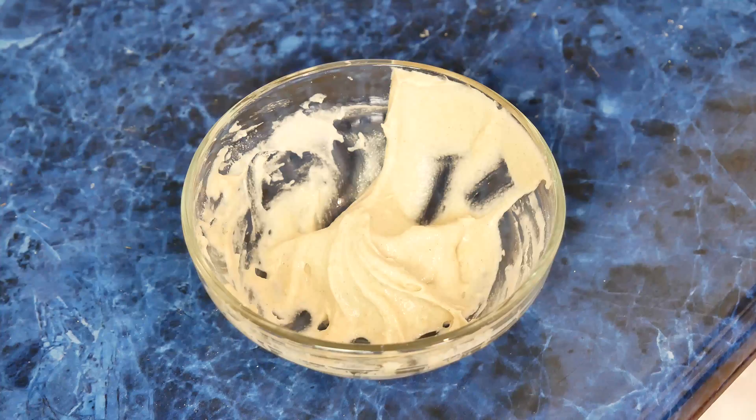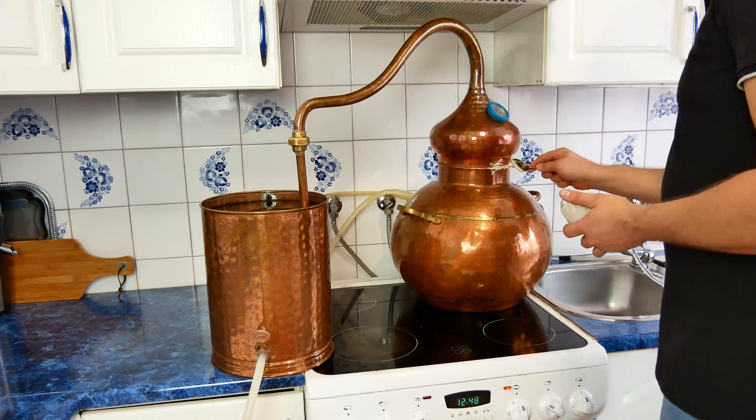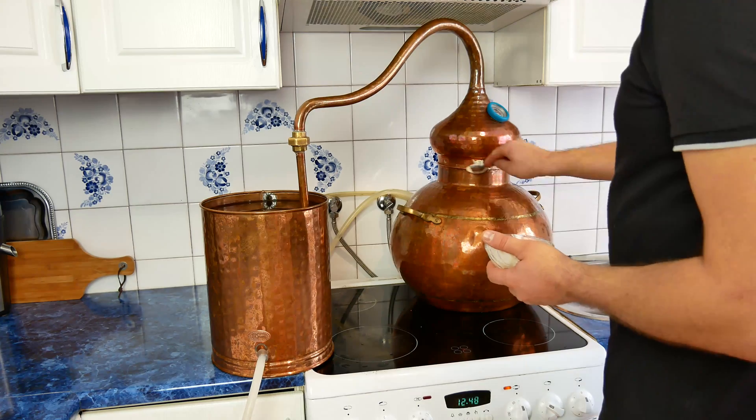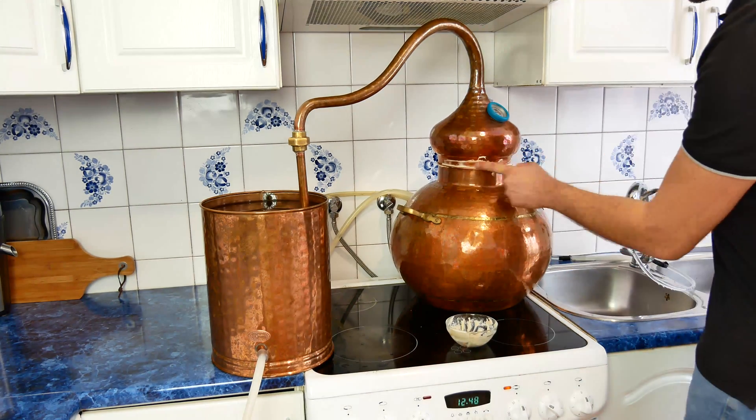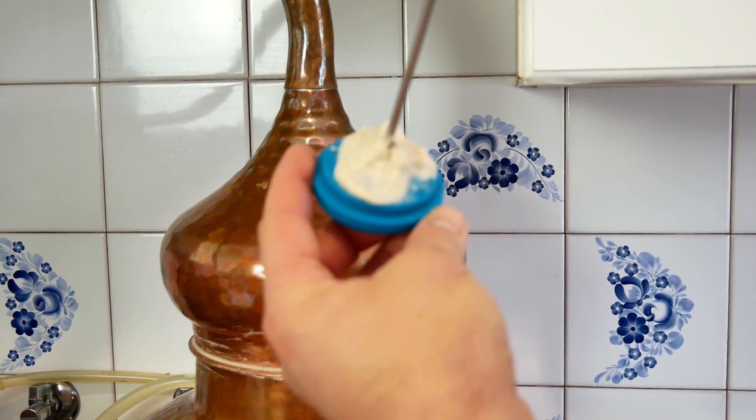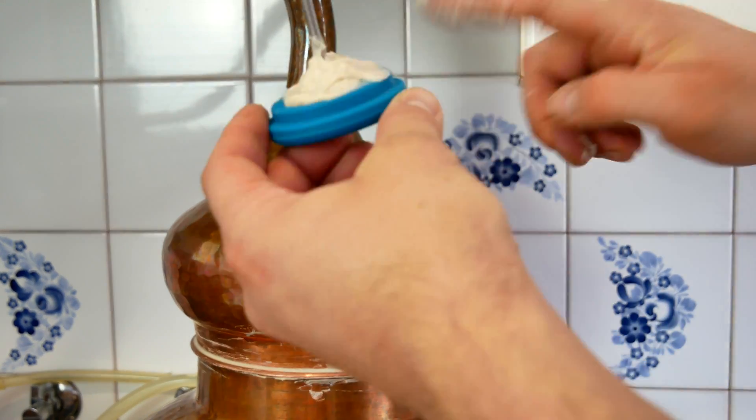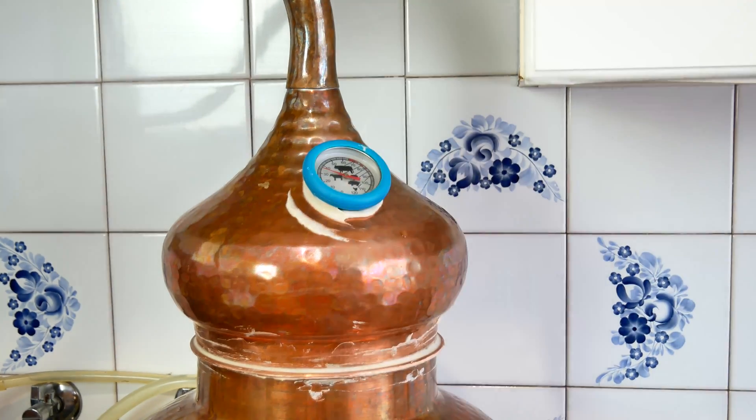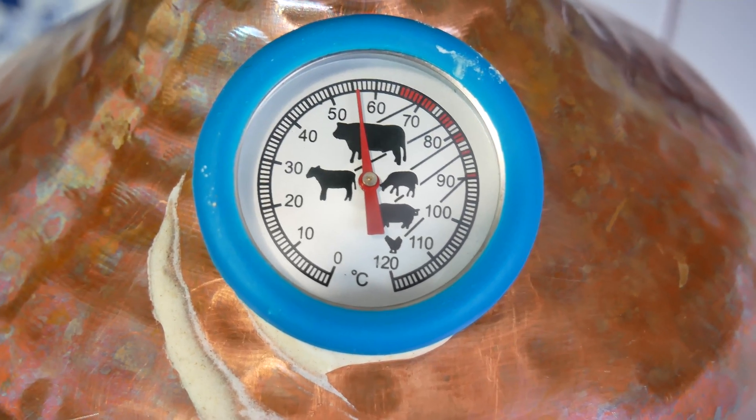The last thing to do before collecting alcohol is to seal all the connections of our alembic. We do it from the mass resulting from the combination of the right flour and water. We carefully seal all connections. Remember to seal the thermometer if you have one.